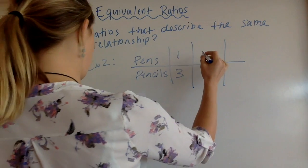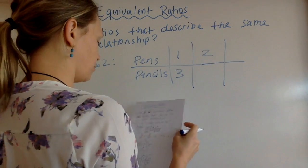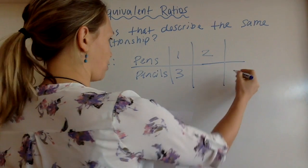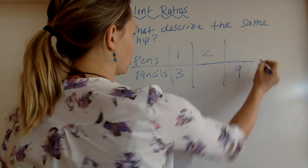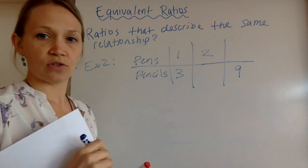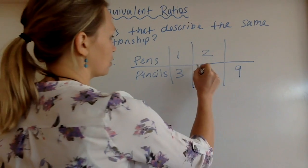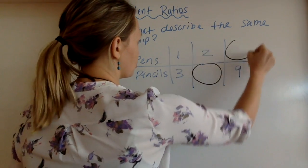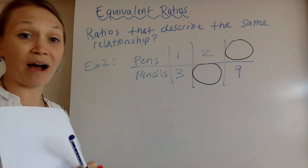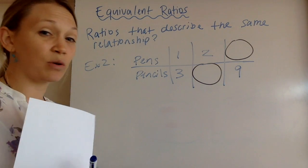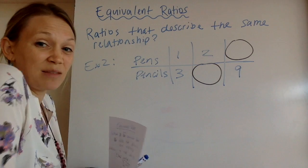And you have a couple friends, and all you know is that one of your friends has two pens, but you don't know how many pencils. And the third friend, you know they have nine pencils, but you're not sure how many pens. So we have two mystery numbers. So a lot of times you're going to see these types of problems to see if you really get equivalent ratios, and you need to fill in the mystery number.